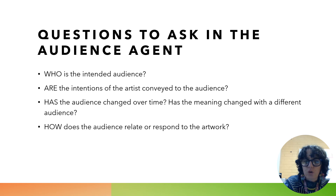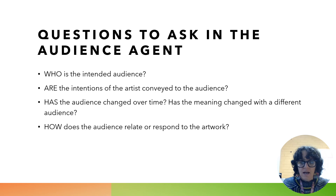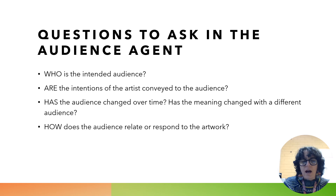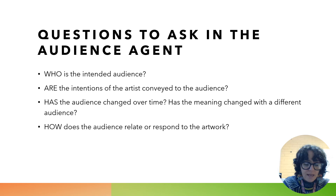Questions to ask in the audience agent include: Who is the intended audience — who could this work be for, who is it speaking to, who might see themselves reflected in this work? Where is this work being displayed and who is going there — is it on a street, or in a gallery you have to pay to enter? Consider how different audiences are accessing that work. Are the intentions of the artist conveyed to the audience — is that audience capable of forming that interpretation? Has the audience changed over time, and with that, has the meaning changed — as in the example of David Hockney's work? And how does the audience relate to or respond to the artwork?